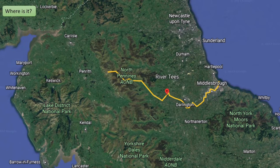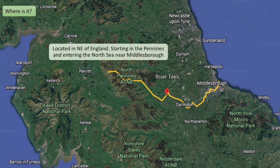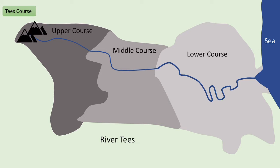So a bit of context: the River Tees is in the northeast of England. It starts in the Pennines and ends up entering the North Sea near Middlesbrough. We're now going to look at the different sections and see how the characteristics change depending on the course of the river.